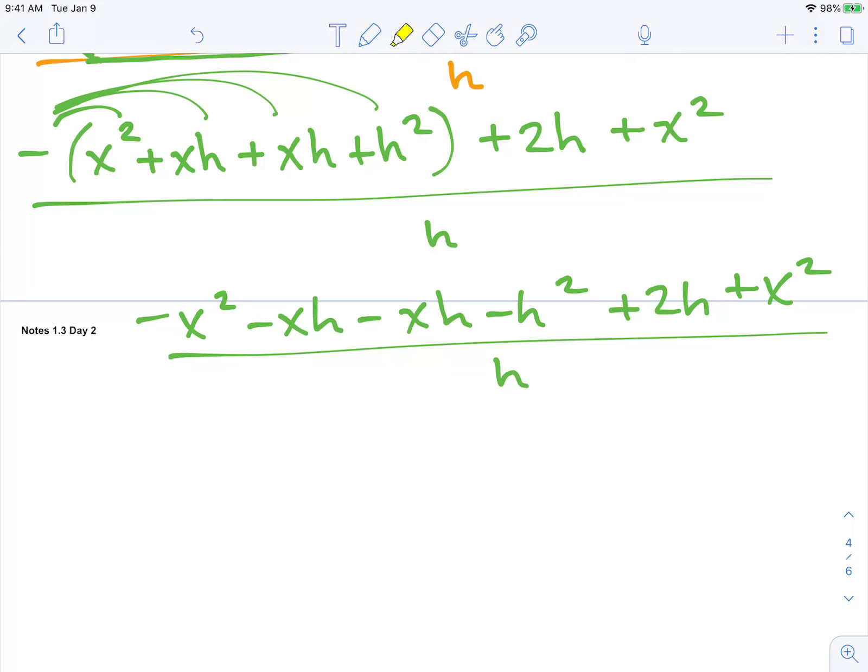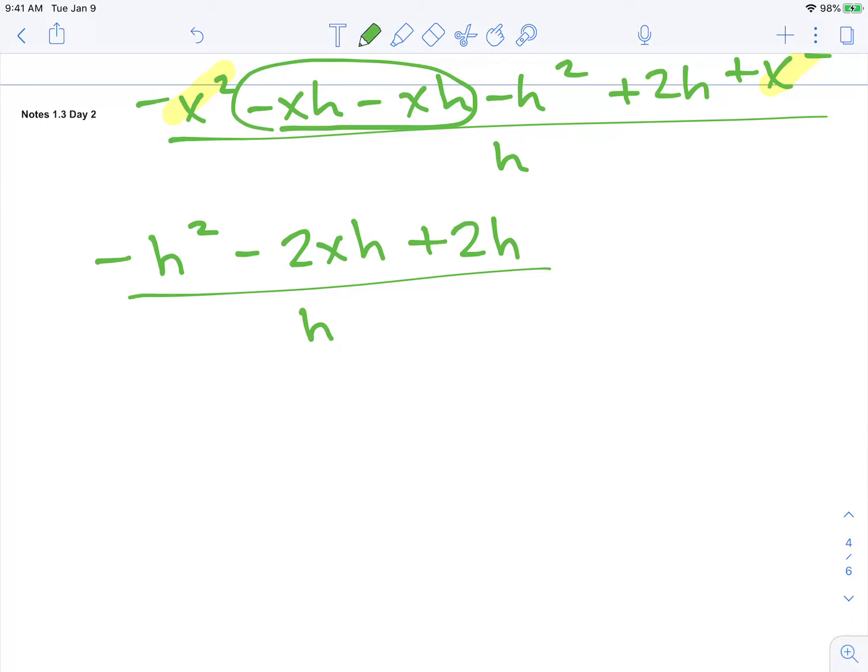Now I'm going to continue simplifying. This negative x squared and that positive x squared become 0. I'm going to put it in standard form. So I have a negative h squared first. These two terms are alike. So that's negative 2xh and then plus 2h, all over h. And now I'm going to factor out an h from the numerator. So I have negative h minus 2x plus 2, all over h. This h and that h have a common factor with h. So our final answer is negative h minus 2x plus 2, where h cannot be 0. That would make it undefined.